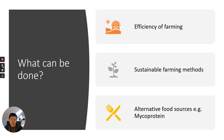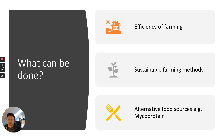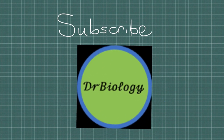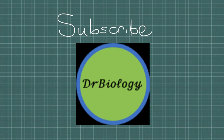So, all quite negative in terms of food security. However, we do need to think about what can be done. In my next video, I'm going to talk about improved efficiency of farming and how that can increase crop and livestock yields. I'll look at sustainable farming methods that don't destroy the biodiversity of the earth, ways to reduce waste and increase crop yield, and alternative food sources for different sources of protein — for example, mycoprotein, which you'll know by its trade name, Quorn. I hope you found that useful. Please do subscribe to Doctor Biology and I'll see you soon.